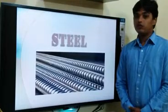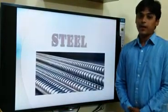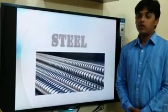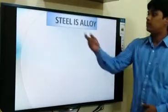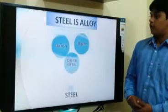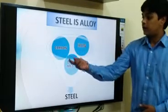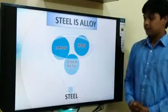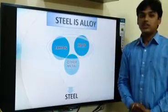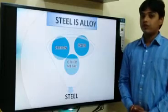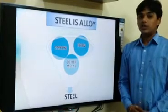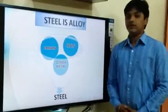As we are going to study RCC members, steel is the backbone of RCC. Steel is basically an alloy made up of iron metal, carbon, and other metals. In steel, the carbon percentage is between 0.1% to 4.5%. The percentage of carbon decides the elasticity of the steel.